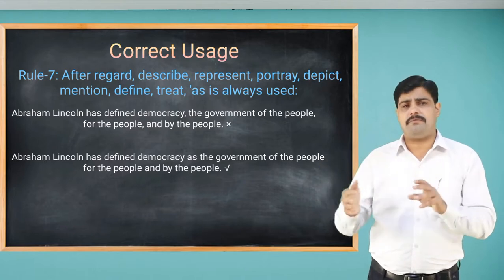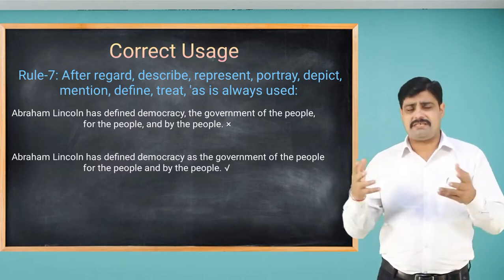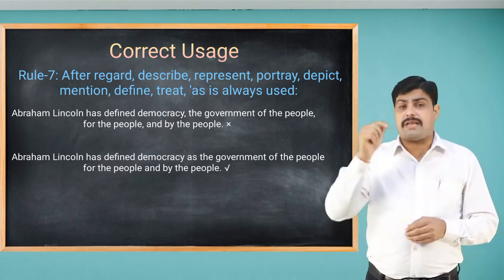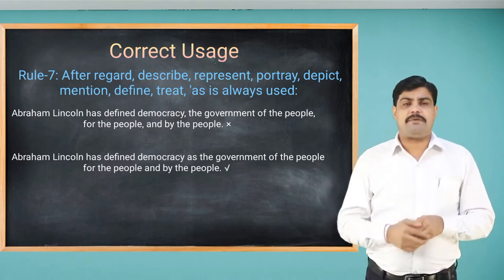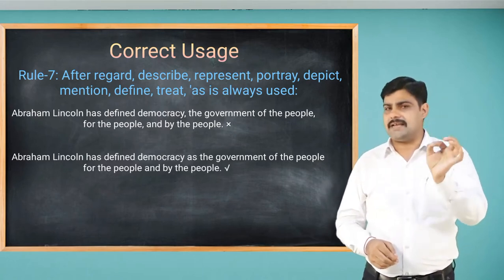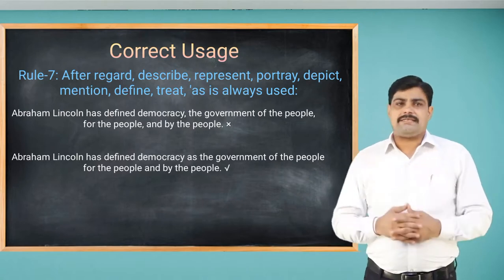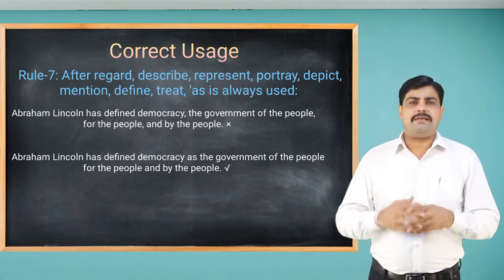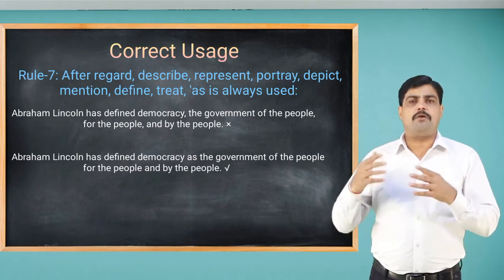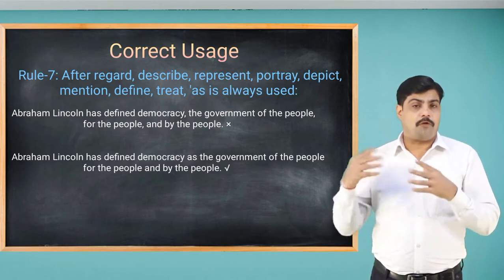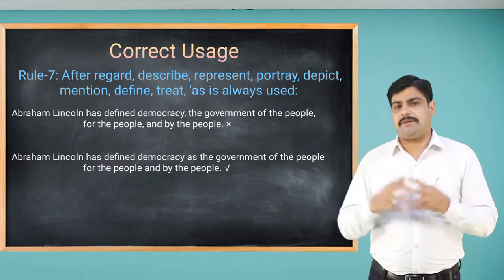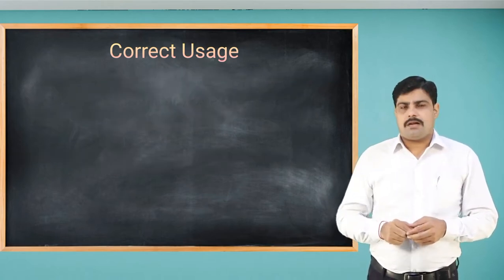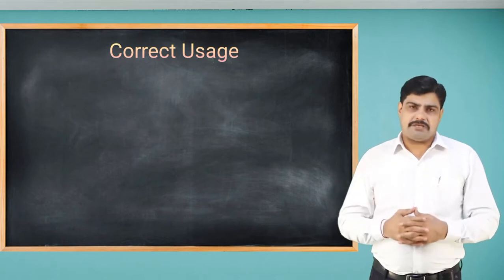'Abraham Lincoln has defined democracy the government of the people, for the people, by the people' is also wrong because 'define' requires 'as'. The correct sentence is: 'Abraham Lincoln has defined democracy as the government of the people, for the people, and by the people.' The word 'as' is a must in this sentence.